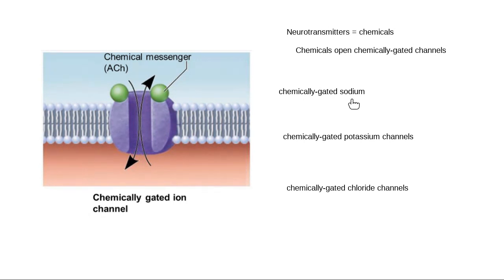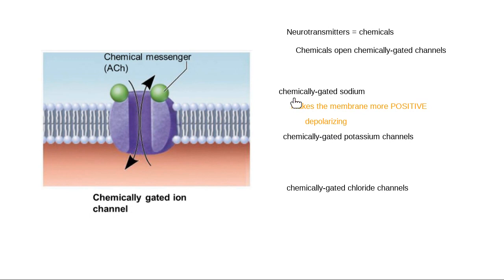When a neuron sends a neurotransmitter that opens a chemically-gated sodium channel, sodium rushes in and brings its positive charge. A chemically-gated sodium channel makes the membrane more positive. The word I use for making the membrane more positive is depolarizing — this is a depolarizing message. My goal is to go from negative 70 to negative 55, getting 15 millivolts more positive, so opening a sodium channel helps get closer to threshold.